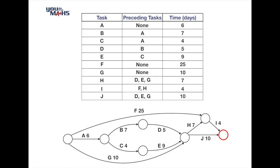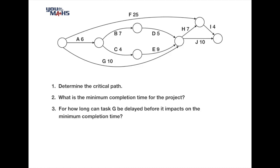The final circle is shown in red, and this is where we record the minimum time to complete the project. Typical questions asked for a project network include the minimum completion time, the critical path - which identifies tasks where any delays would impact the overall project time - and whether delays on individual tasks such as task G may impact the overall completion time.